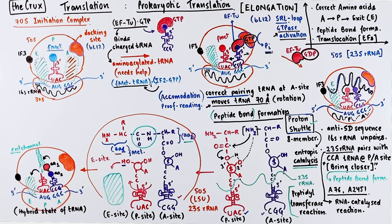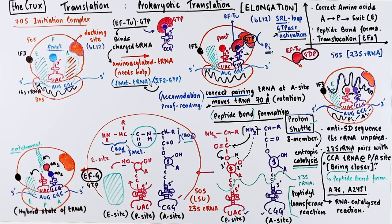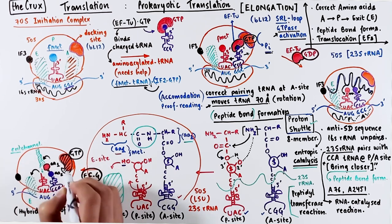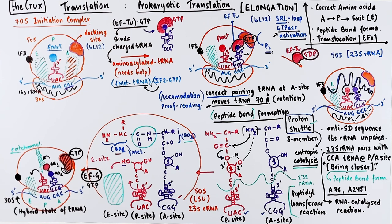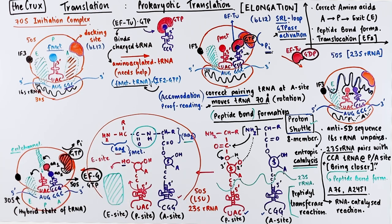At this stage, another elongation factor enters the process: elongation factor G, or EF-G, which also carries a GTP. This elongation factor binds the docking region, just like EF-Tu. As EF-G binds the docking site, the 30S subunit rotates. The A site is occupied by a tRNA with two amino acids and the docking site is bound by EF-G, causing congestion. To relieve this congestion, the 50S subunit tries to move forward to make space at the A site, and the BL12 protein cleaves the phosphate bond in the GTP attached to EF-G.